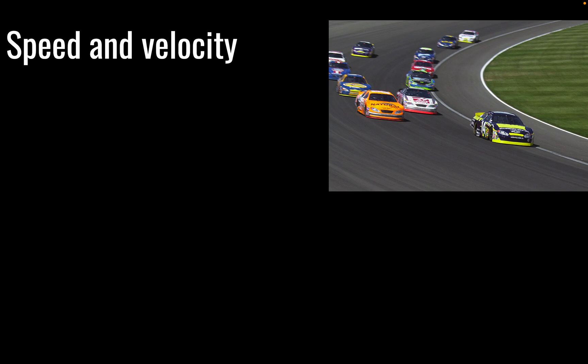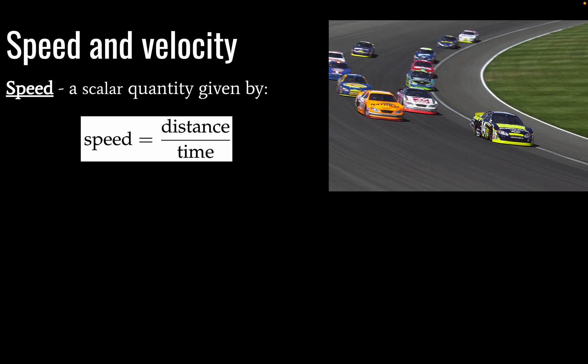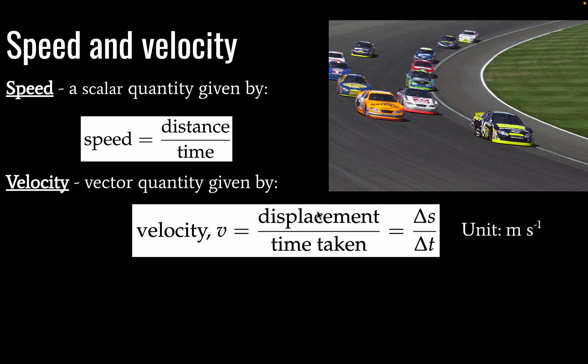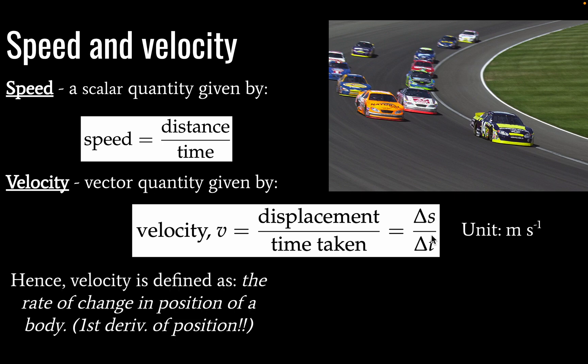All right, let's talk about speed and velocity. So speed is a scalar quantity, and it is given by distance divided by time. Okay, so this is a scalar, this is a scalar, this is a scalar. Velocity, however, is a vector quantity given by displacement divided by time taken. So here, velocity is a vector, and displacement is also a vector. However, time is still a scalar, and you can divide or multiply vectors by scalars. That's fine.